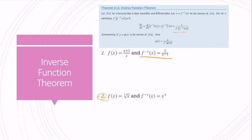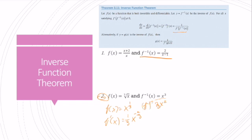Let's go ahead and do that with this example. I have f of x equals the cube root of x, which is x to the one-third. The derivative of this is one-third x to the negative two-thirds. Now, f inverse of x is x cubed, and its derivative is 3x squared — that's a nice and easy inverse.